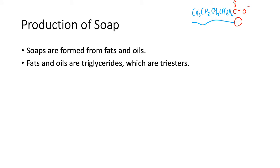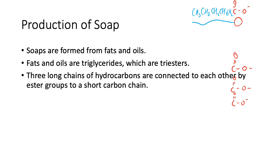Fats and oils are triglycerides, which are triesters. That means they have three ester groups. These three long chains of hydrocarbons are connected to each other by ester groups to a short carbon chain. Here's the short carbon chain, and then the long non-polar tails are over there. That whole thing is a fat or an oil, a triester or triglyceride.